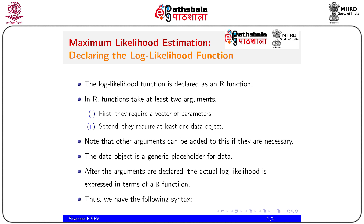Note that other arguments can be added if necessary. The data object is a generic placeholder for data. After the arguments are declared, the actual log likelihood is expressed in terms of an R function. If you need further parameters, you can include additional arguments. You can also use the triple-dot (...) argument, which helps pass arguments to nested functions.